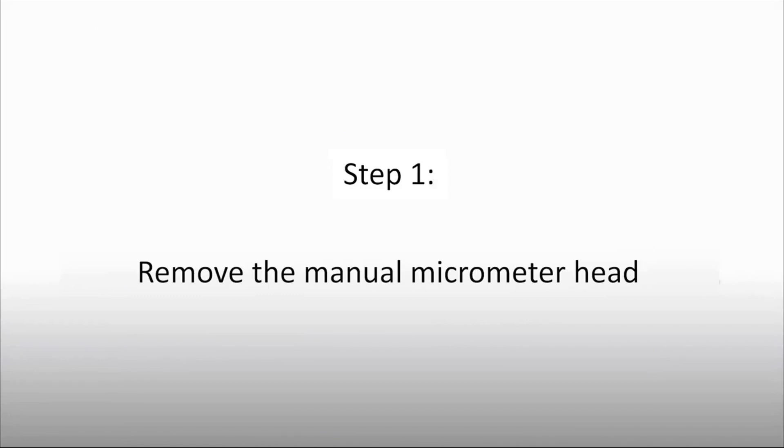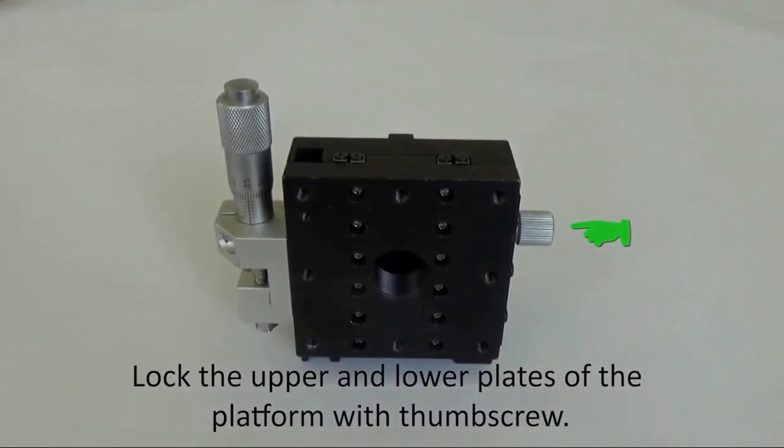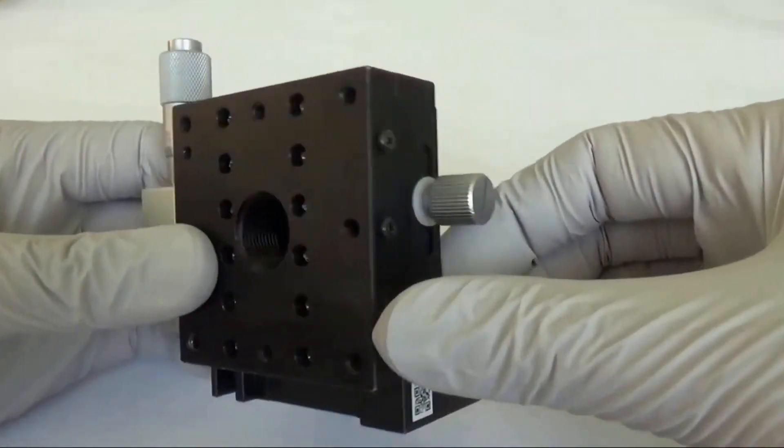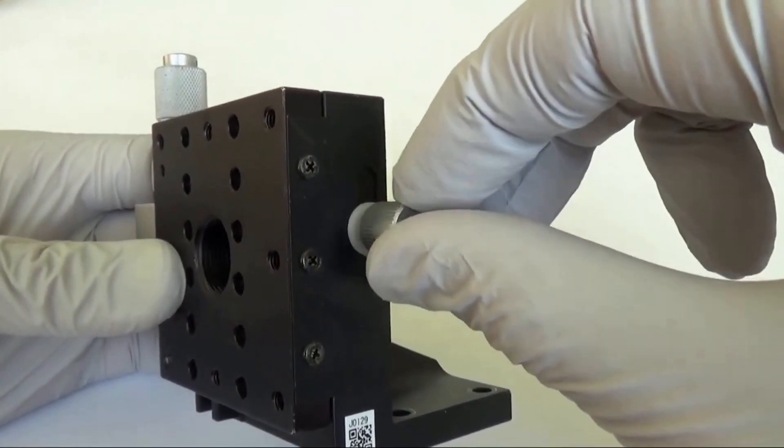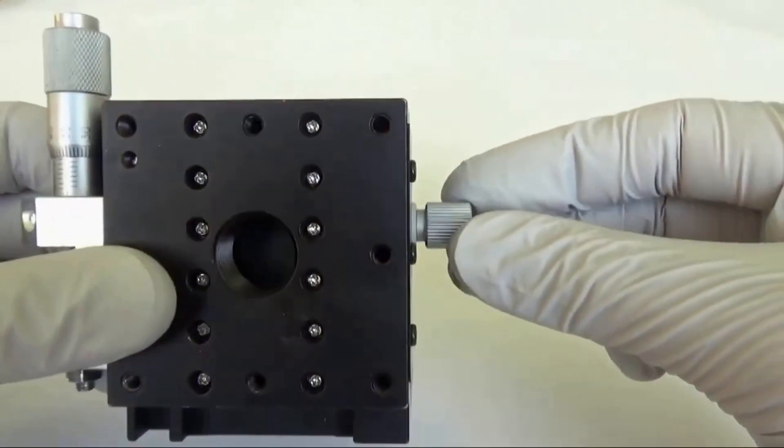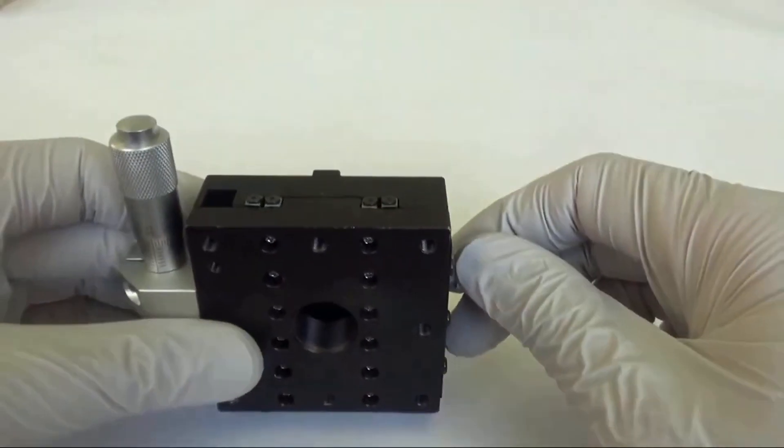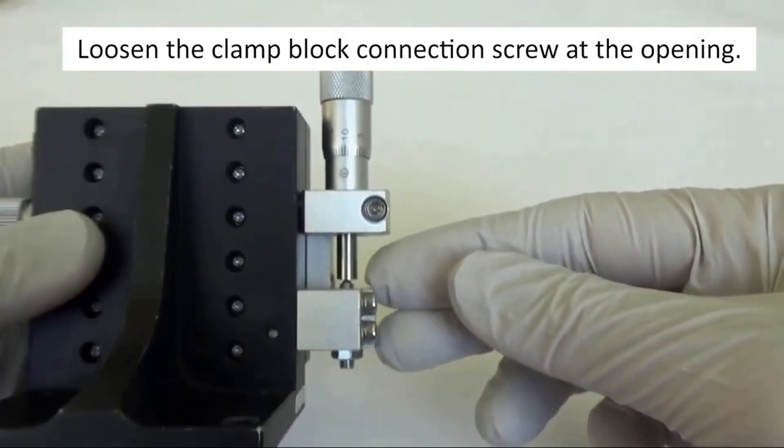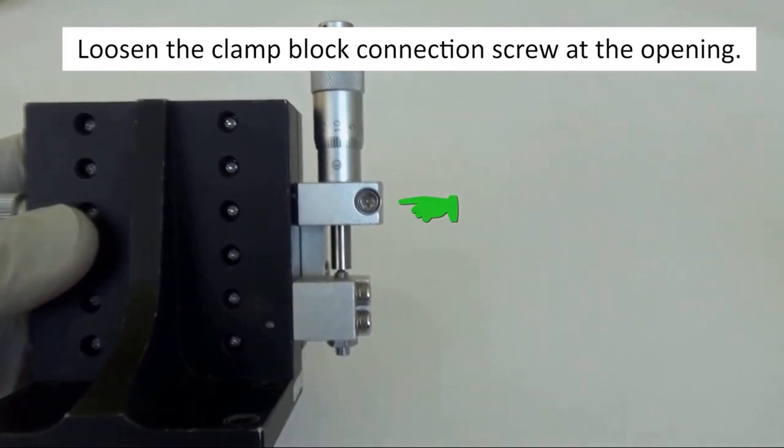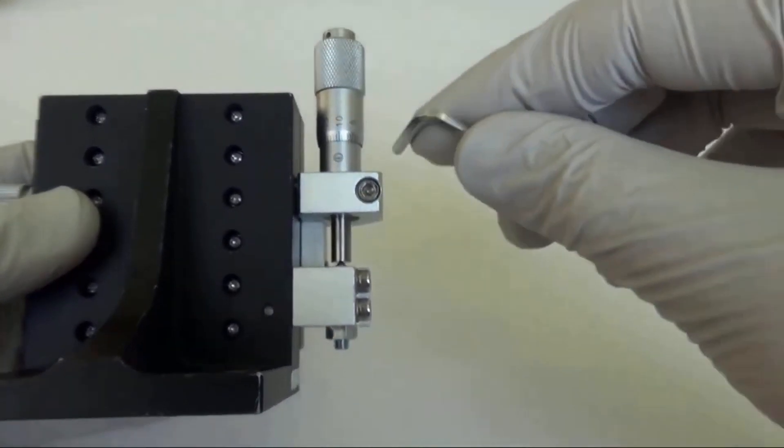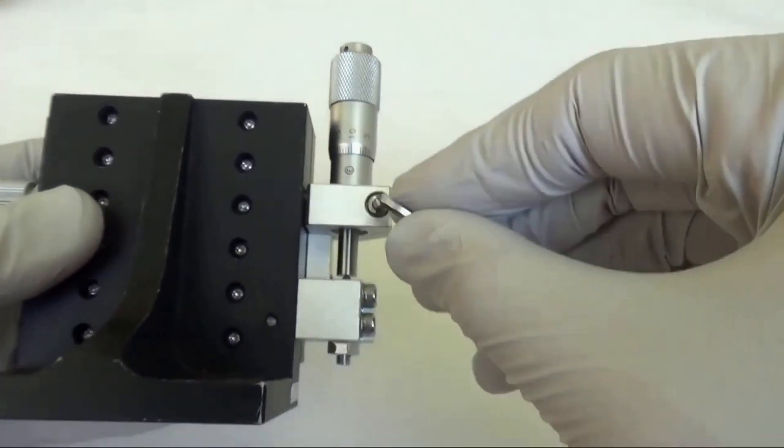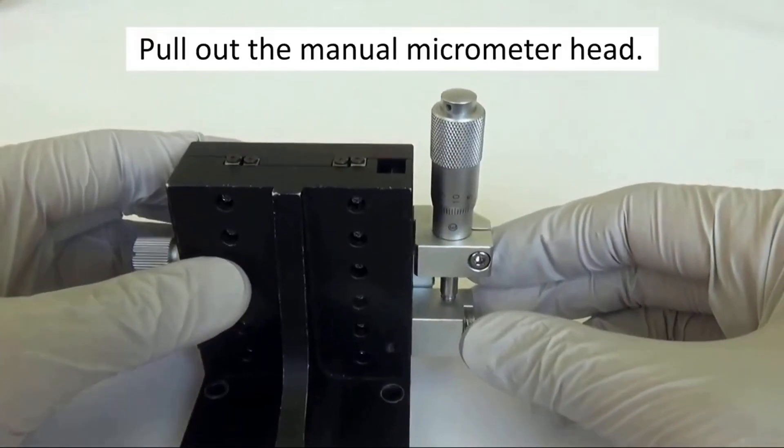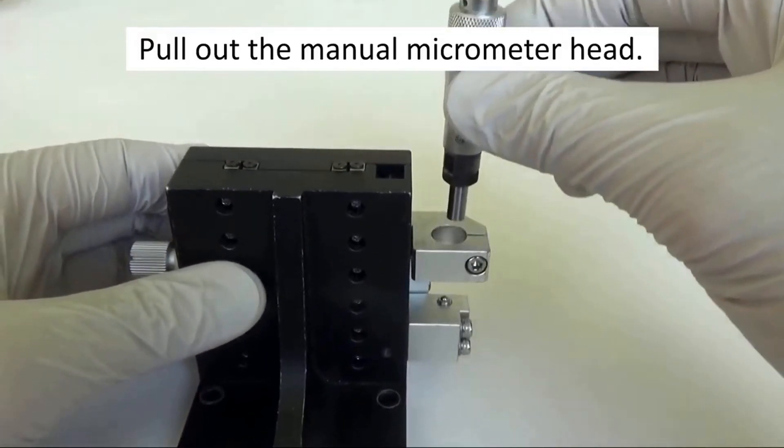Step one: To begin, first lock the upper and lower plates of the platform with the thumbscrew. Next, loosen the clamp block connection screw at the opening, then carefully pull out the manual micrometer head.